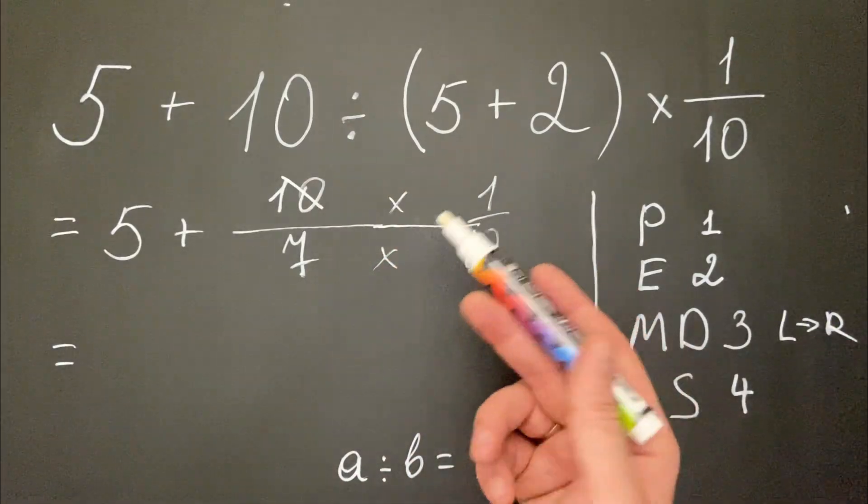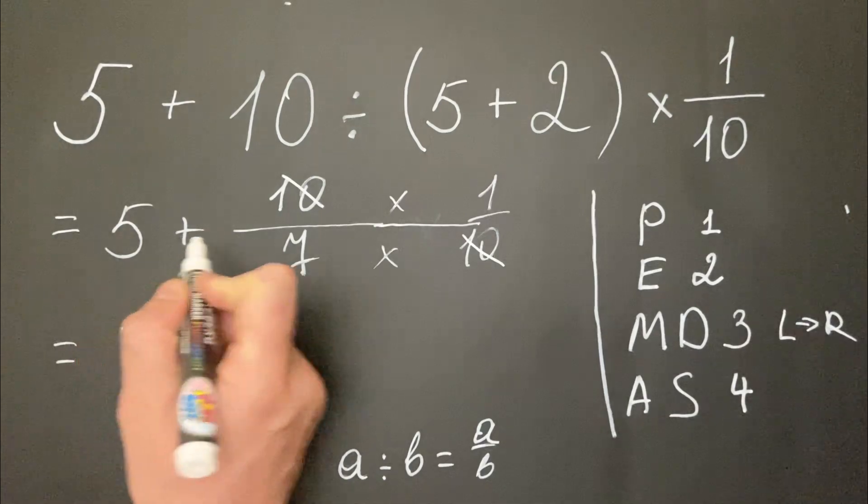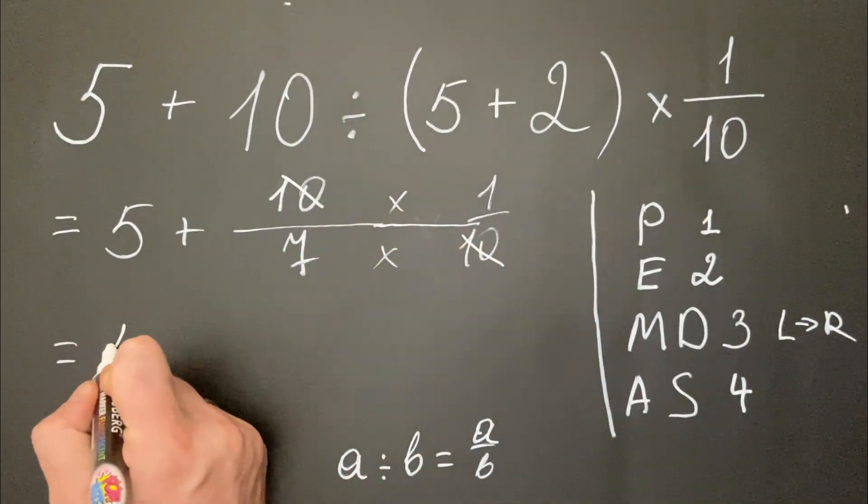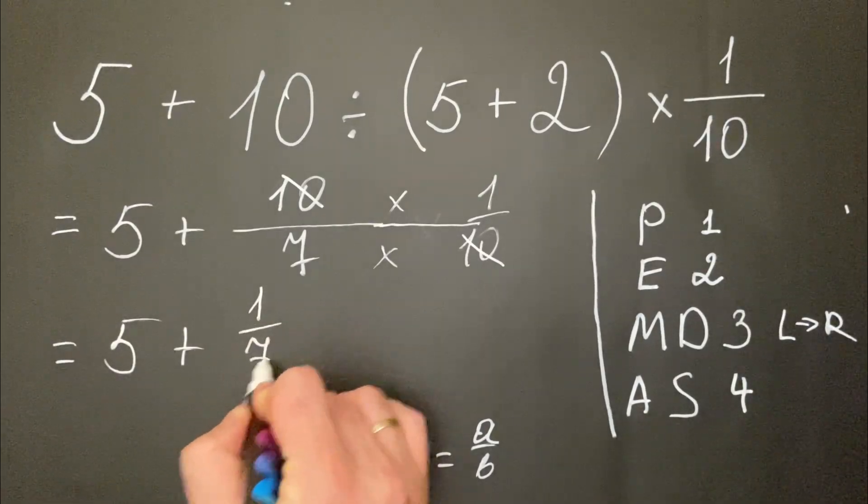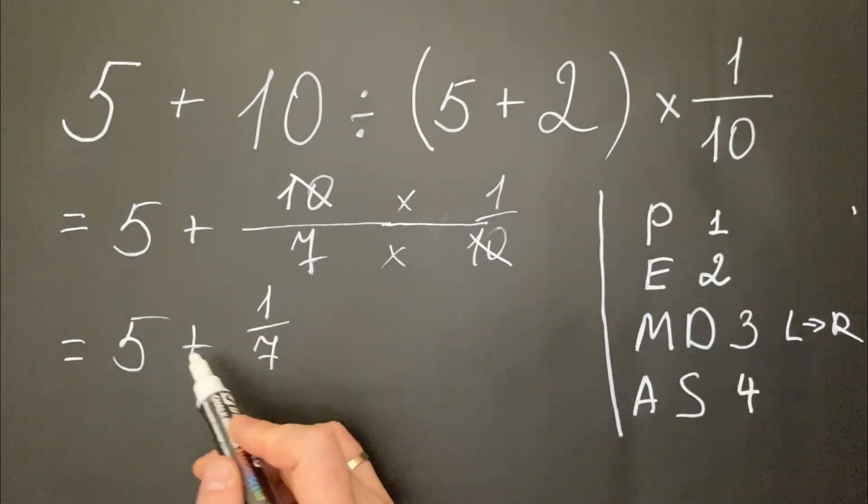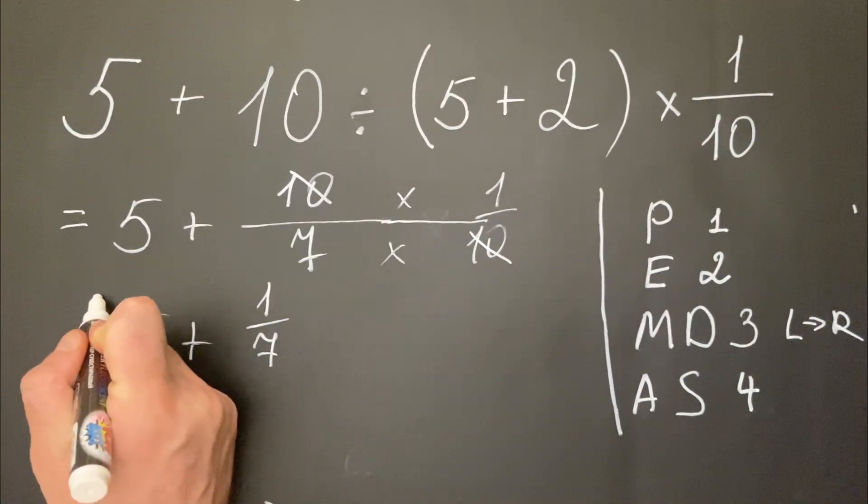The result is 5 plus 1 over 7. Here we have 5 plus 1, but the denominator should also be 7. Therefore we multiply by 7 to get the same denominator.